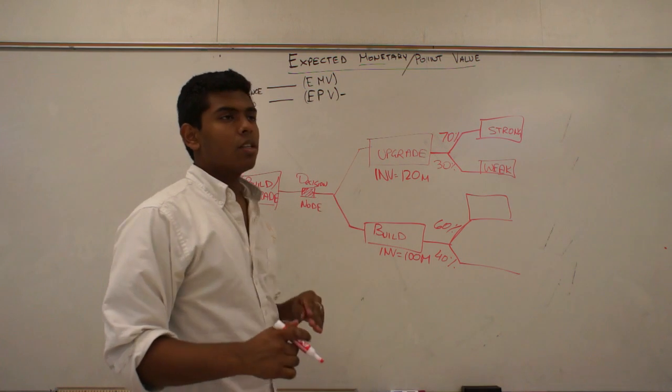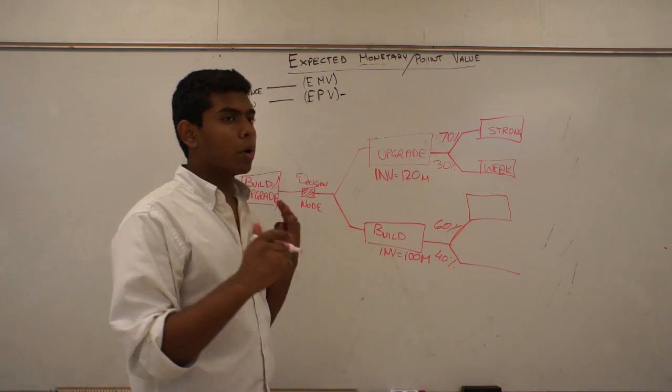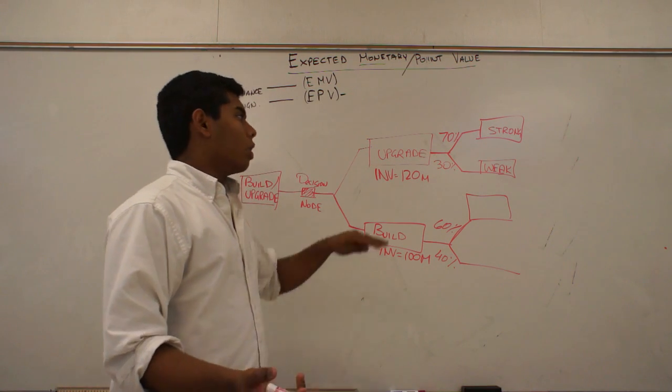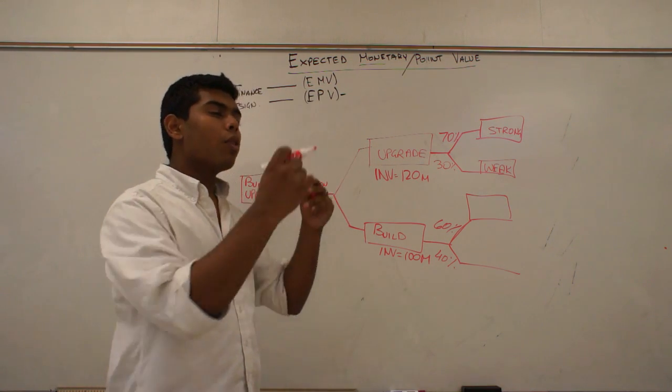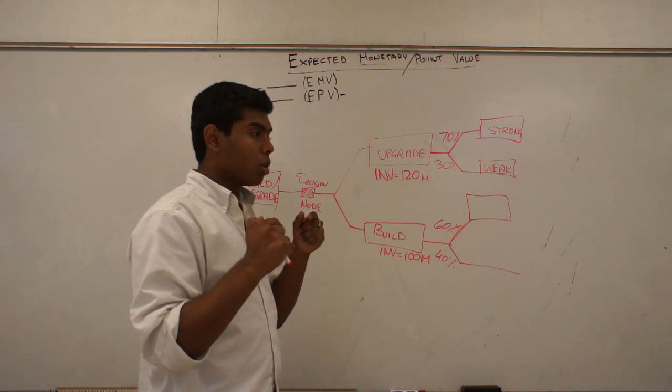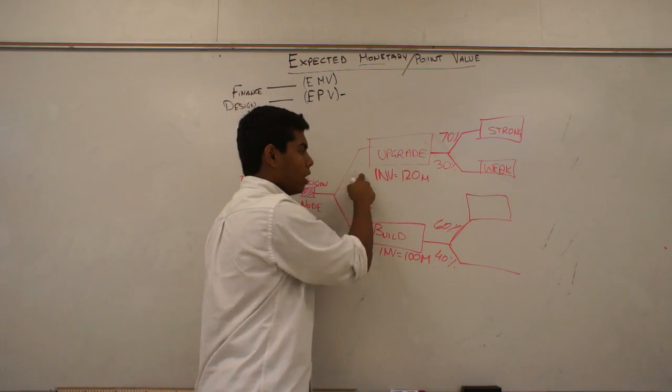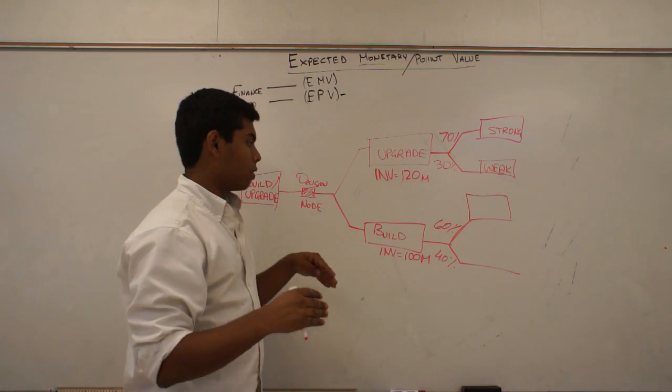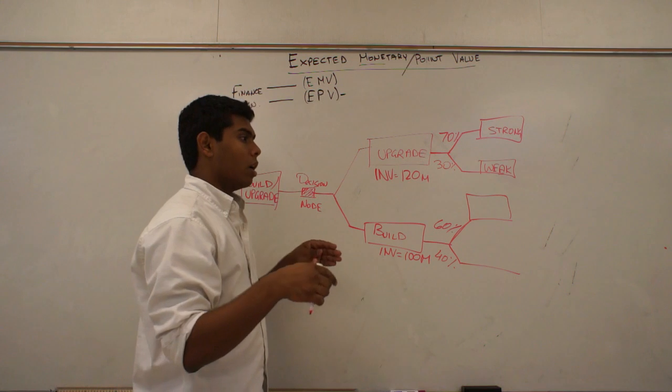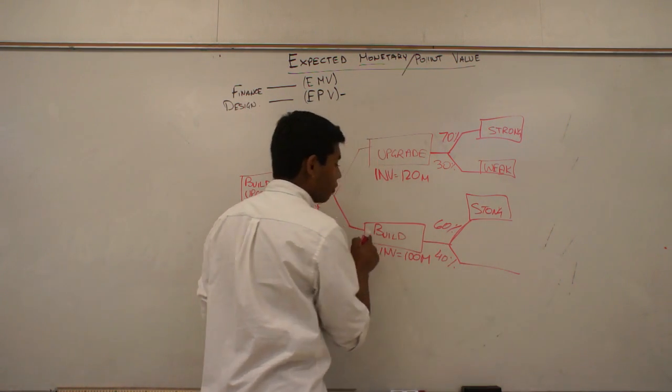Now you might think that, hey, isn't the chances going to be the same to upgrade or to build, whether the market is going to be strong or not? In this case, we're looking at how the market will treat us as a company. So if we upgrade, the chances of the market being strong and helping us is 70%. If we upgrade, the chances of the market helping us out and being strong is 60% if we build.